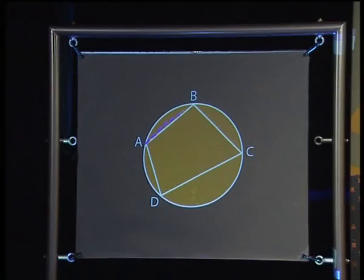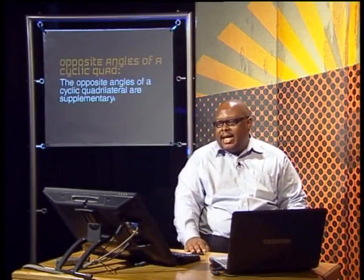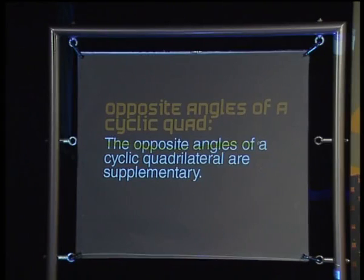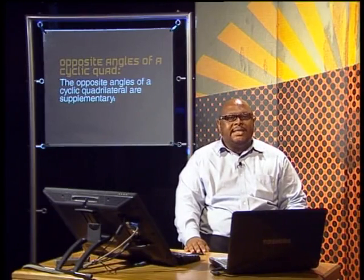So in this diagram, A, B, C, D is a cyclic quadrilateral. Cyclic quadrilaterals have some special properties that we can prove. Here is the first theorem to do with cyclic quadrilaterals: the opposite angles of a cyclic quadrilateral are supplementary. In other words, the opposite angles of a cyclic quadrilateral add up to 180 degrees.